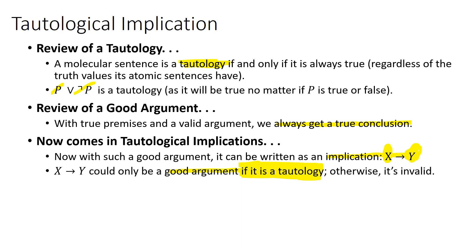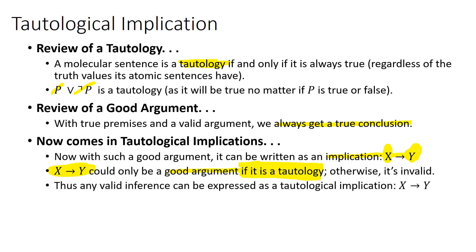Maybe we can think of it this way. The entire argument is put into one sentence, namely X implies Y. Its atomic sentences can be true or they can be false. Given all possible combinations, if that conditional sentence is always true, it must be a valid argument. Whatever the atomic sentences' value, we end up with something true. Conversely, if we get a false value for the sentence X implies Y, that must mean the argument doesn't always work — it must be invalid. So thus, any valid inference can be expressed as a tautological implication. A few examples should help.